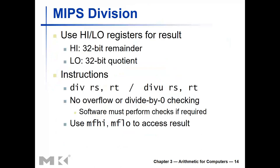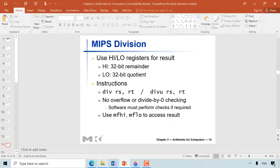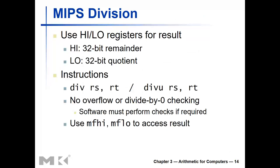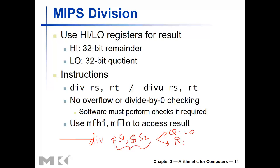In terms of MIPS instructions, we have div and divu (div unsigned). When you execute, for example, div $s1, $s2, the quotient of s1 divided by s2 goes into the LO register, and the remainder goes into the HI register.